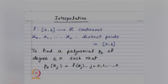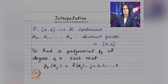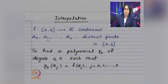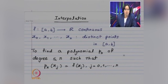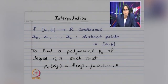Our function f is defined on the closed interval [a, b] and takes real values. It is not necessary that it should be continuous — just defined on [a, b] will do — but let us assume f to be continuous. Suppose you have got x_0, x_1, ..., x_n, which are distinct points in the interval [a, b]. Then the problem is to find a polynomial p_n of degree less than or equal to n such that p_n agrees with the given function f at these n+1 points. We are going to show existence and uniqueness of such a polynomial.